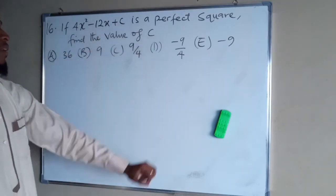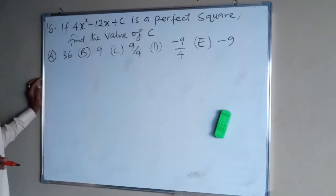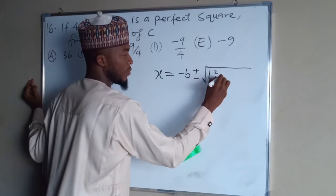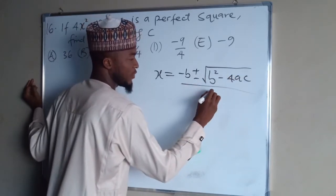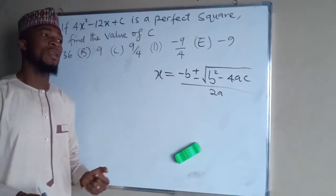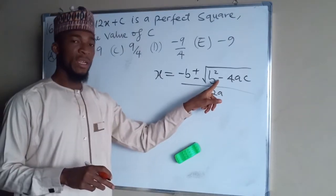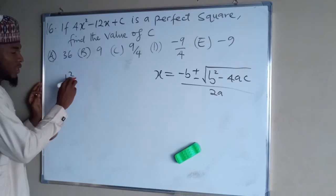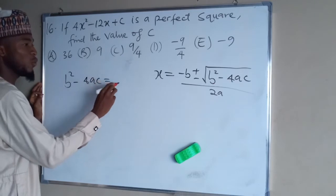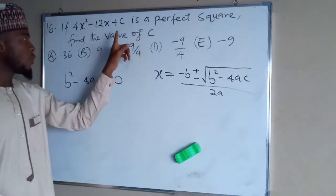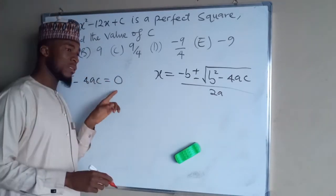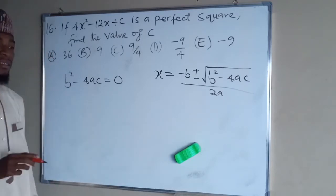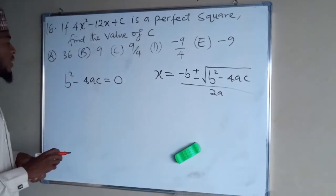If this quadratic function is a perfect square, find the value of c. Recall the quadratic formula: x equals minus b plus or minus the square root of b squared minus 4ac, divided by 2a. This formula is derived from completing the square. The discriminant b² minus 4ac is key: if it equals 0, the equation is a perfect square; if greater than 0, it has real and distinct roots; if less than 0, it has imaginary roots with no real solution.